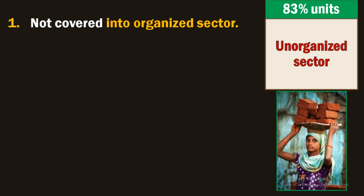In the previous part we saw organized sectors and acts like the Shop and Commercial Establishment Act 1947. If you are coming under these, you are organized; exactly opposite means unorganized. A question arises here: does the government not do anything? Doesn't the government see that 17% is on one side and about 83% is on the other? Such a large ratio of workers does not come under the organized sector and no facilities are provided to them.